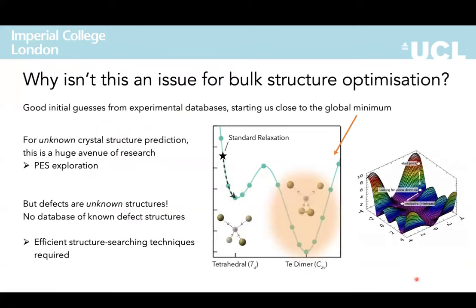This isn't only an issue for defects — it can also affect bulk crystal structure optimization. However, it's typically less of an issue there because we have experimental databases providing good initial guesses from X-ray diffraction, which puts us close to the true global minimum. For unknown crystal structure prediction, this is a huge research area. For defects, people assumed it wasn't a problem since we know the bulk crystal structure and can just create the defect and relax — but in fact defects themselves are unknown structures with no database of known configurations, so we can end up sitting closer to a local minimum rather than the actual global minimum on our potential energy surface.